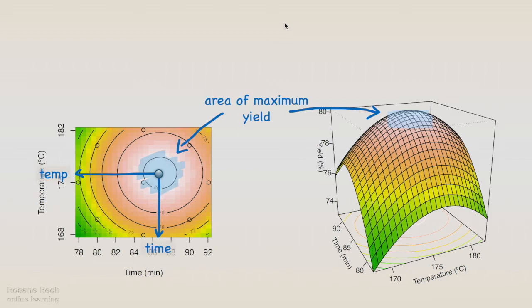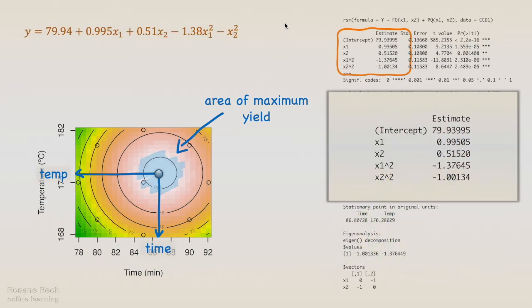The precise determination of the maximum point uses the response surface equation. The maximum condition, if it exists, will be the set of x1 and x2 for which the partial derivatives delta y delta x1 and delta y delta x2 are zero. It is called the stationary point.